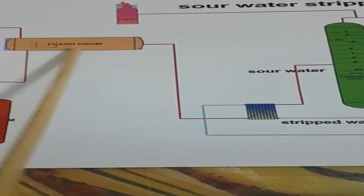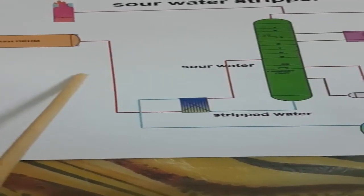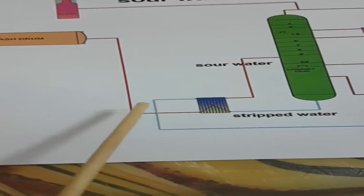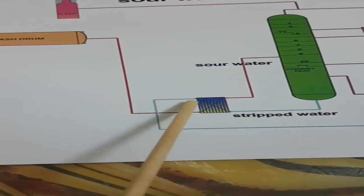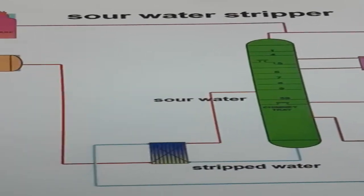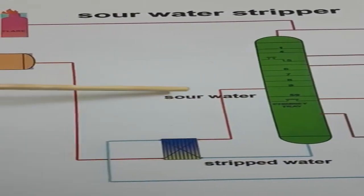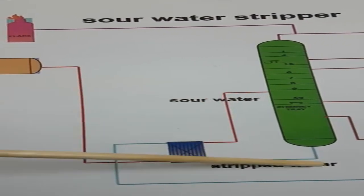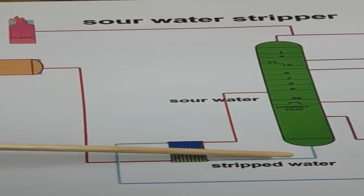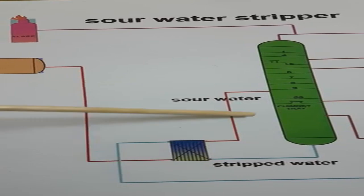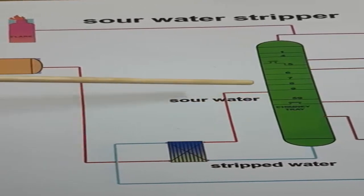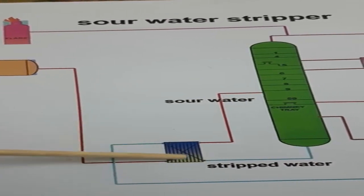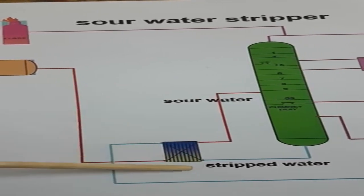After that, pure sour water — free from hydrocarbons — is collected and transferred to the stripper by pump. Before transferring to the stripper, we have an interchanger. The function of the interchanger is to interchange heat between sour water and strip water. The strip water coming from the stripper has high temperature, while the sour water going to the stripper is below 50°C. So we use a plate type, shell and tube, or spiral type heat exchanger to exchange heat between these two fluids.